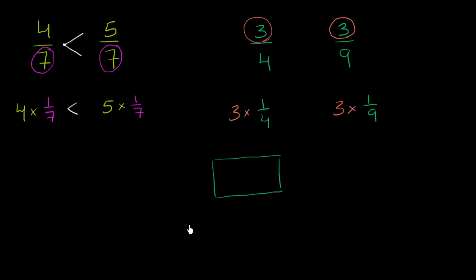A whole right over here. So the same sized whole. A fourth is literally taking the whole and dividing it into four pieces, while a ninth is taking the whole and dividing it into nine equal sections.